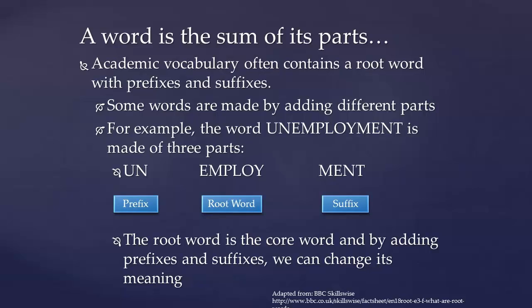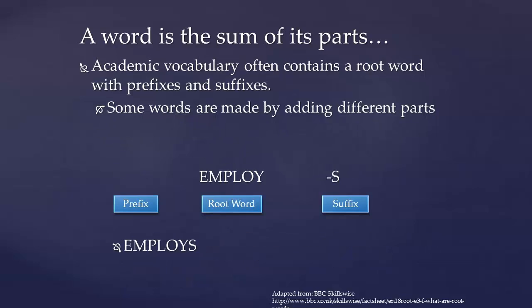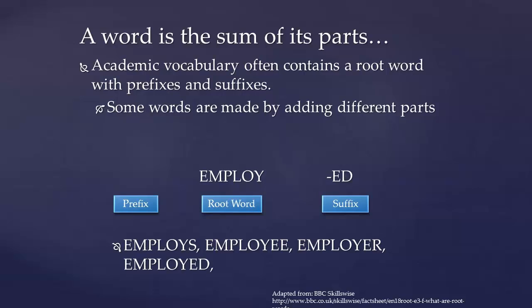As a student, it is important that you know about the morphology, or the different forms of a word. By adding different prefixes and suffixes to the word employ, we can make new words like employees, employee, employer, employed, and employable. Knowing how to modify a root word allows you to expand your vocabulary in a fairly easy way.